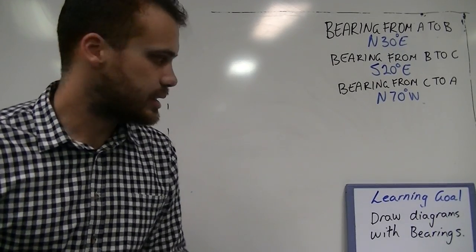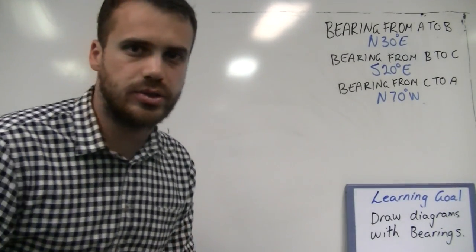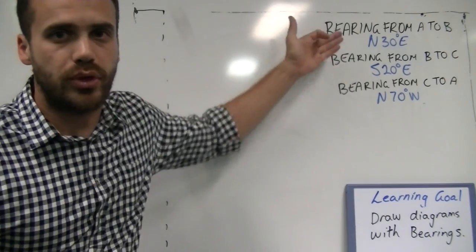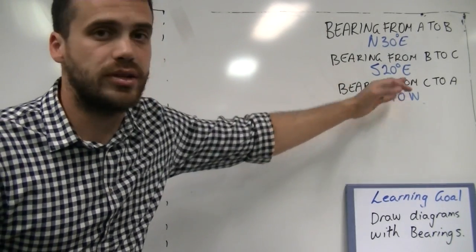Alright, so the learning goal for this lesson is drawing diagrams with bearings. Dealing with things like north 30 degrees east, south 20 degrees east, or north 70 degrees west.